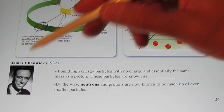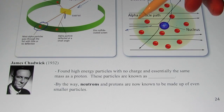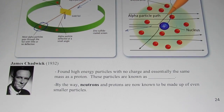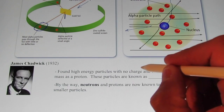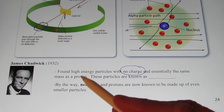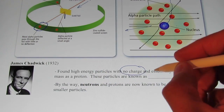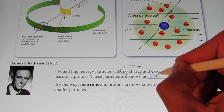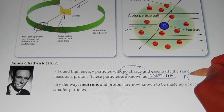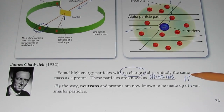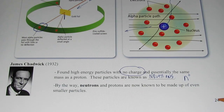James Chadwick in 1932 found a third subatomic particle. It was speculated and theorized that it existed, but it wasn't until 1932 that James Chadwick discovered it. He found high energy particles with no charge, and essentially the same mass as a proton — so much larger than an electron, about the same size as a proton. These particles are known as neutrons. They're symbolized by the lowercase letter n with a zero, denoting that they don't have a charge. So neutrons are about the same mass as a proton, and they do not have a charge.